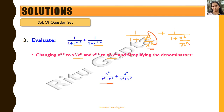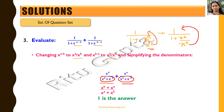Similarly, taking x raised to power a to the numerator, we get the second term as x raised to power a divided by x raised to power a plus x raised to power b. The denominator in the first term is the same as the denominator in the second term, so we add the numerators to get x raised to power b plus x raised to power a, all divided by x raised to power a plus x raised to power b, which equals 1.